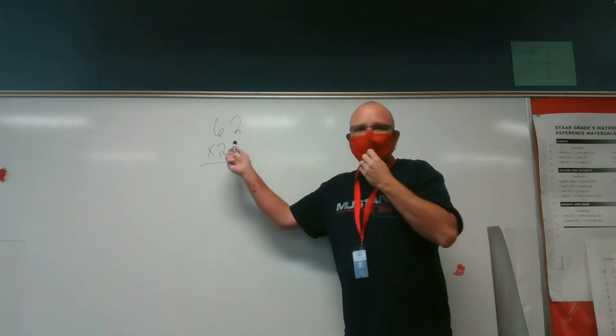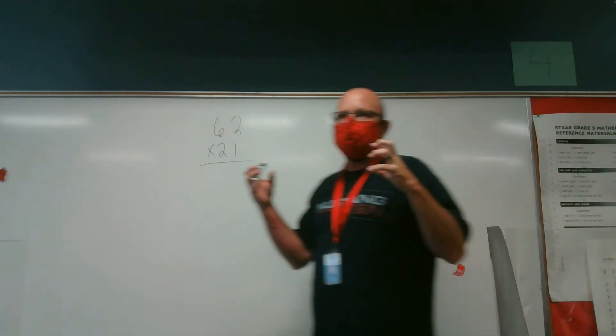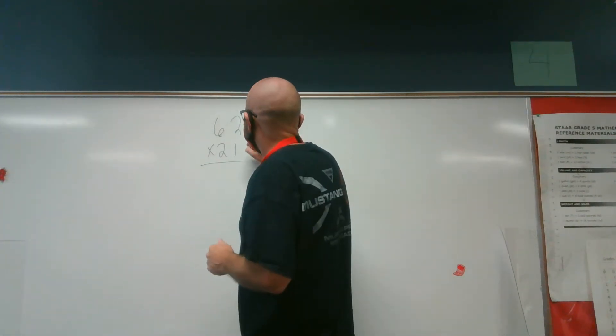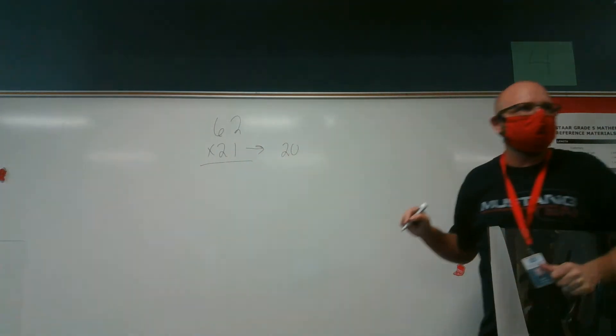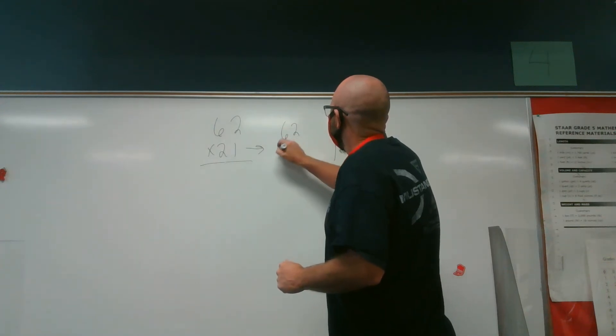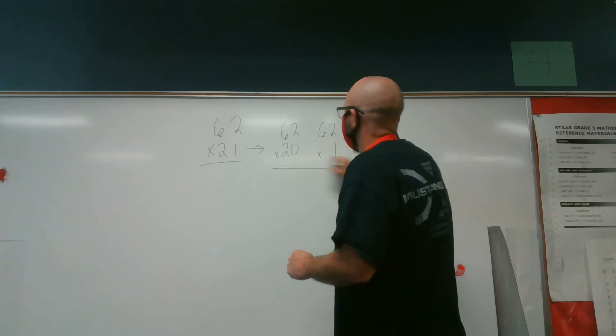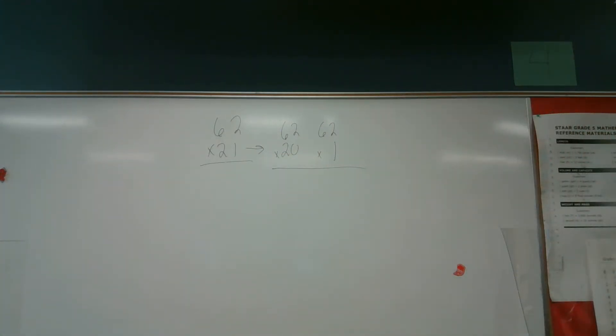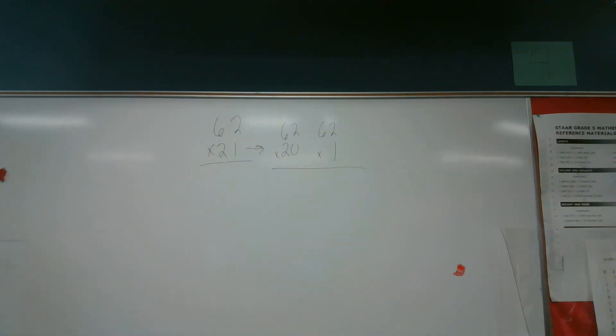And if we break this apart in expanded form, like we did at the beginning of the year, I can take my second factor and I can make it 20, because two is in the tens place, and one. So if I want to multiply 62 times 20 and 62 times one, I can do that very easily. Because that's all I'm doing as I do this problem, and I'll show you as we go through it how each one matches.